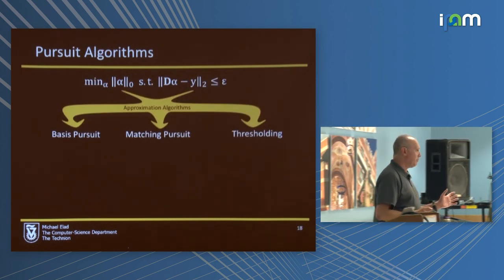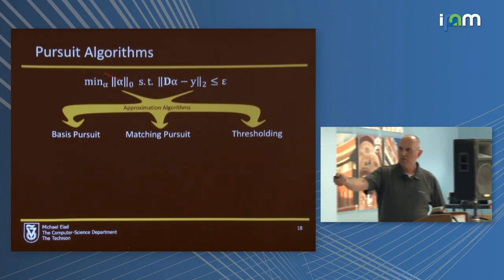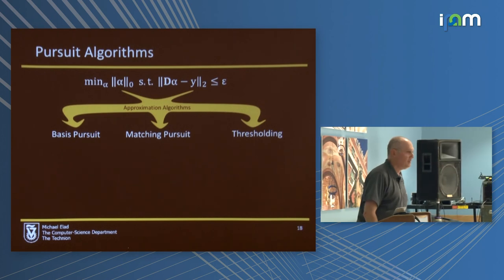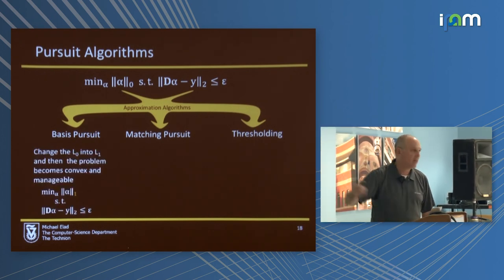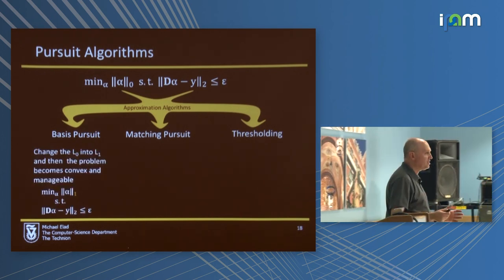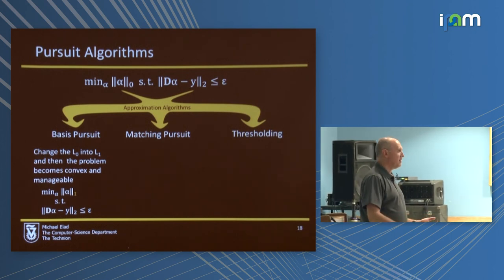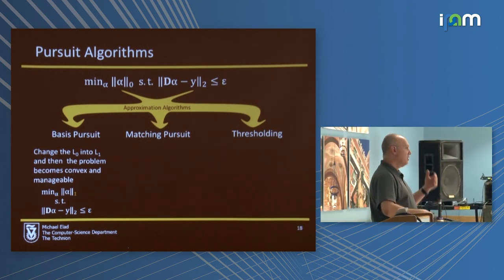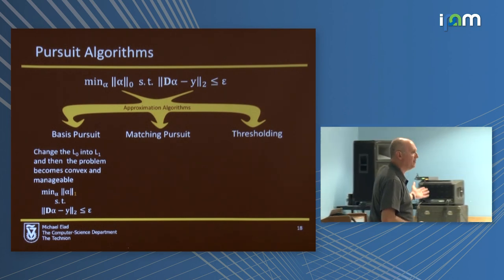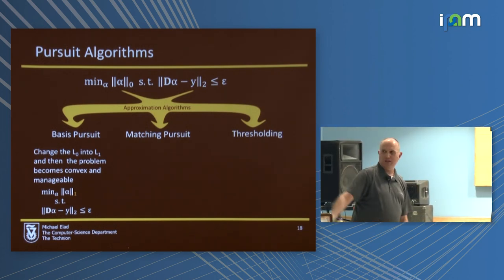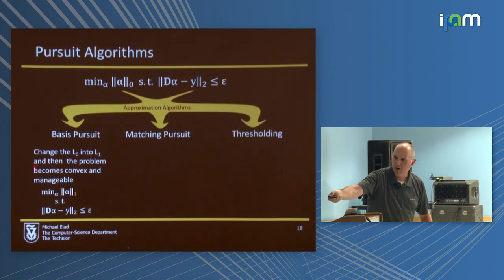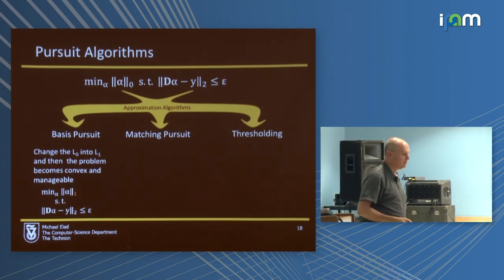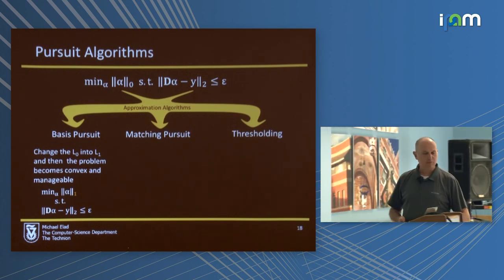Basis pursuit is the simplest to explain. You take this problem, which is too complicated, and simply replace the L0 by L1. By doing this, the problem is convex and there are solvers and you can do things. Chen, Donoho, and Saunders in 1995 published a paper showing that this actually works fine — it oftentimes nails the solution of the original problem.